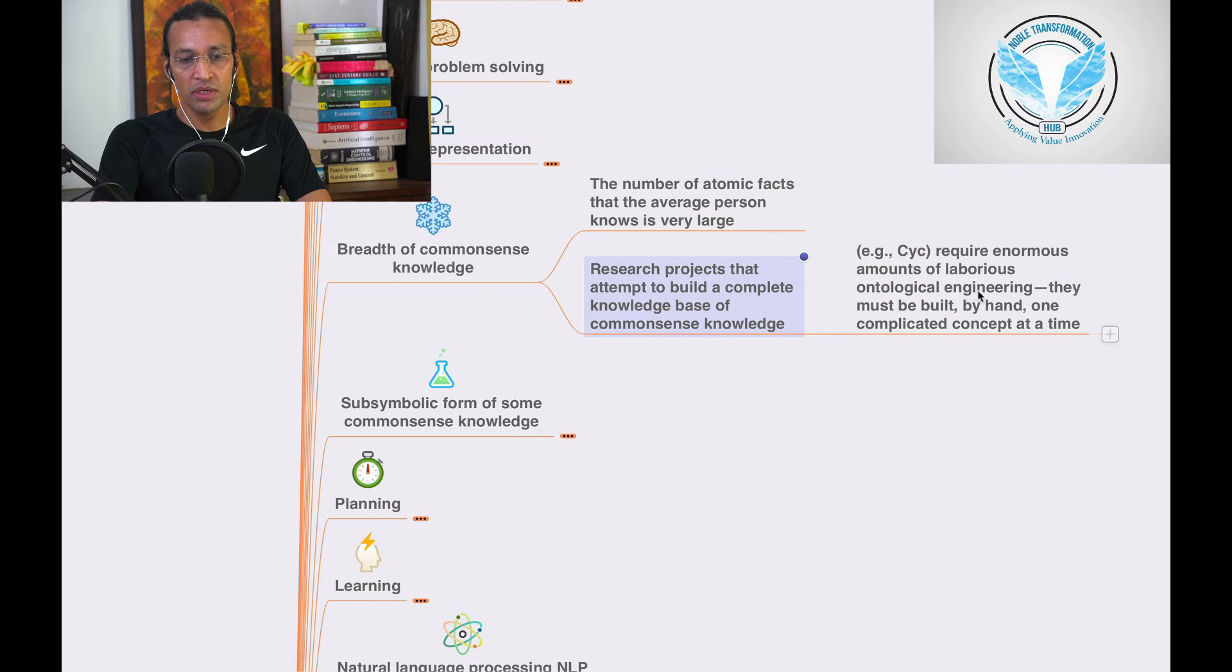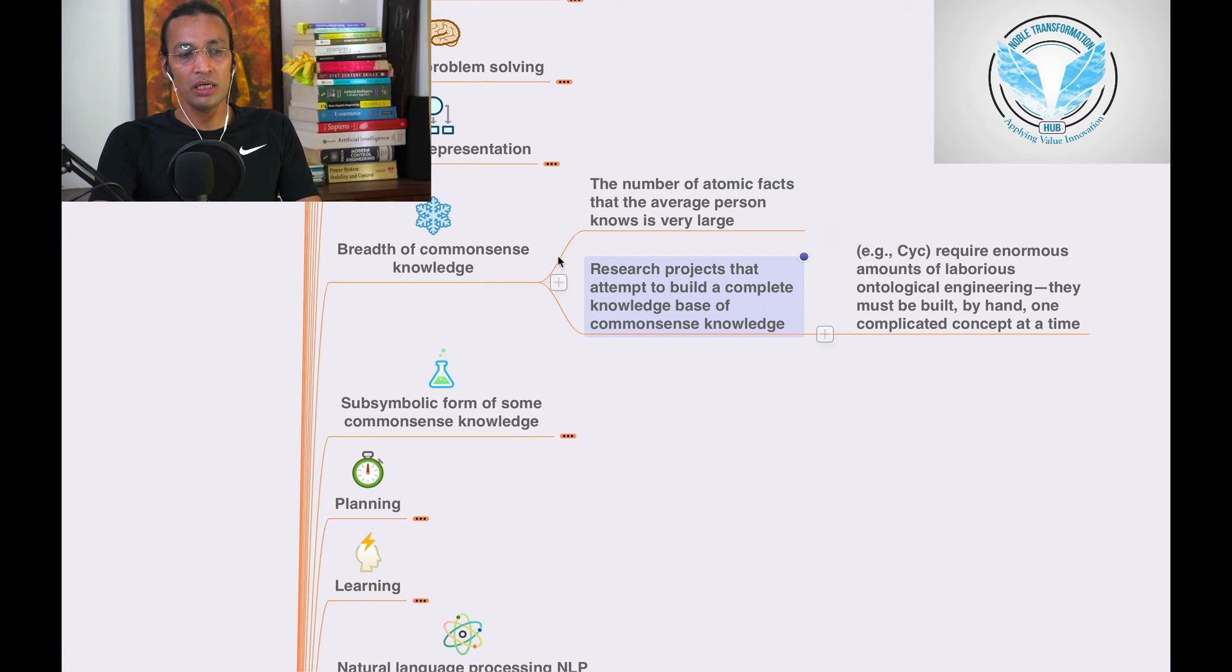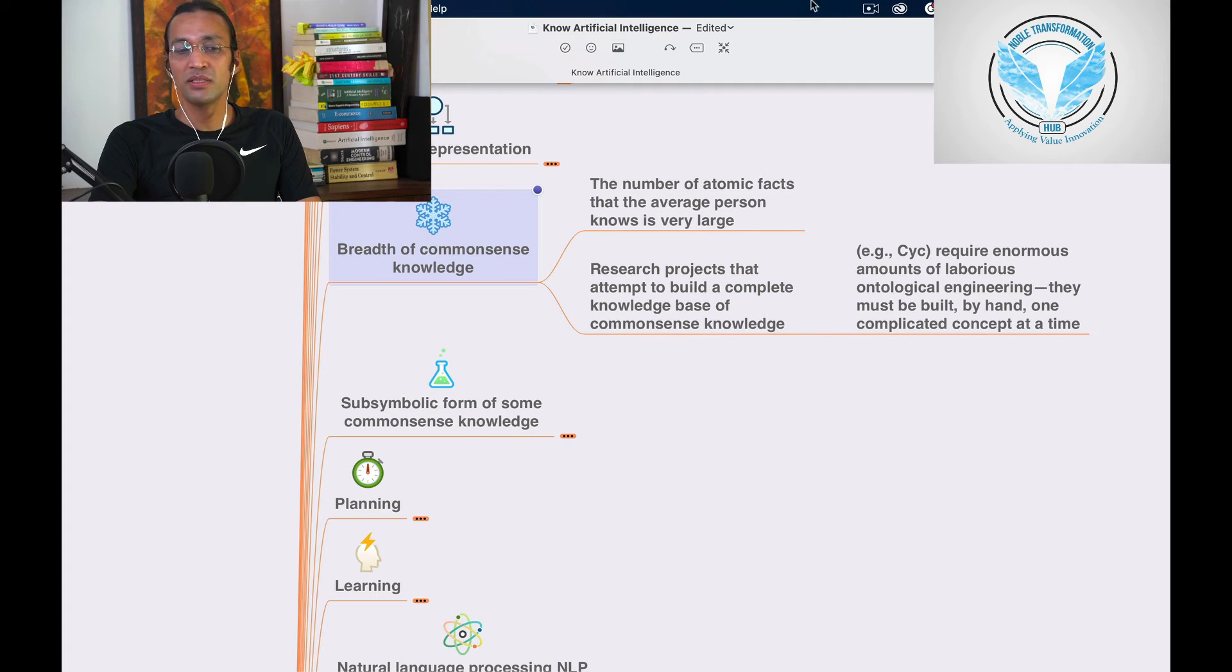It requires enormous ontological engineering. When you go understanding the relationship between the concepts, what is happening, what are the relations, then and only then you are going to understand the breadth of common sense knowledge.